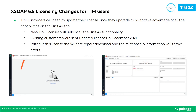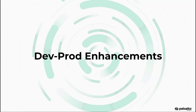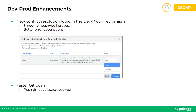New Threat Intel Management customers will automatically receive an updated license, and existing customers were sent an updated license in December 2021. Based on the feedback collected, there was a concerted effort to clean up the Development to Prod feature. This includes a smoother push-pull process and better error handling descriptions. Overall, the user should see improved performance in the workflow.